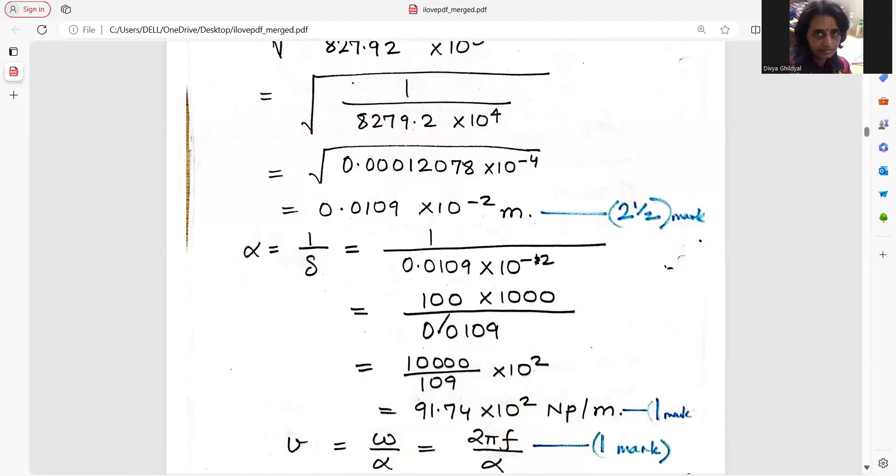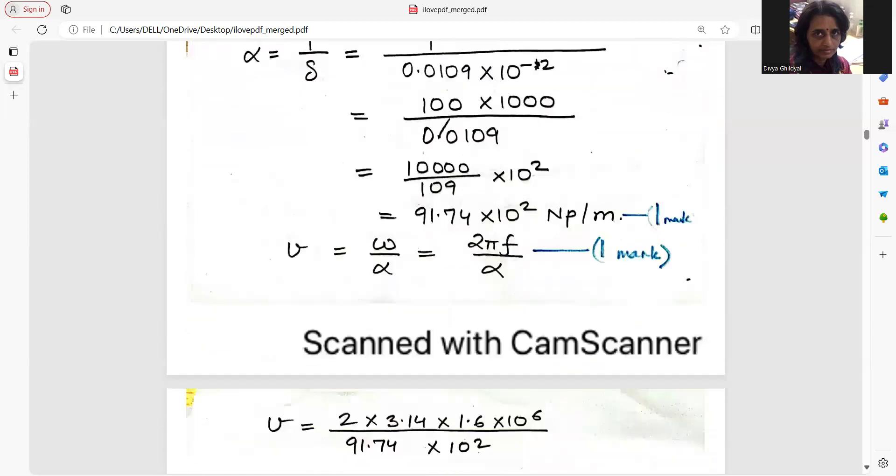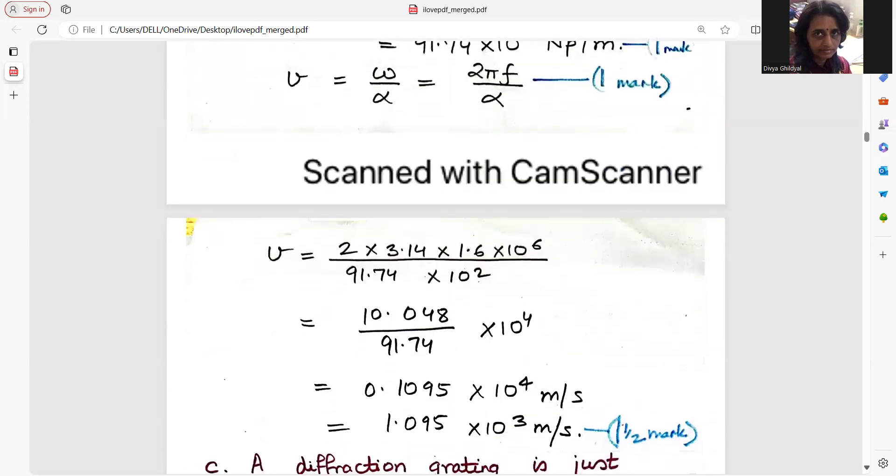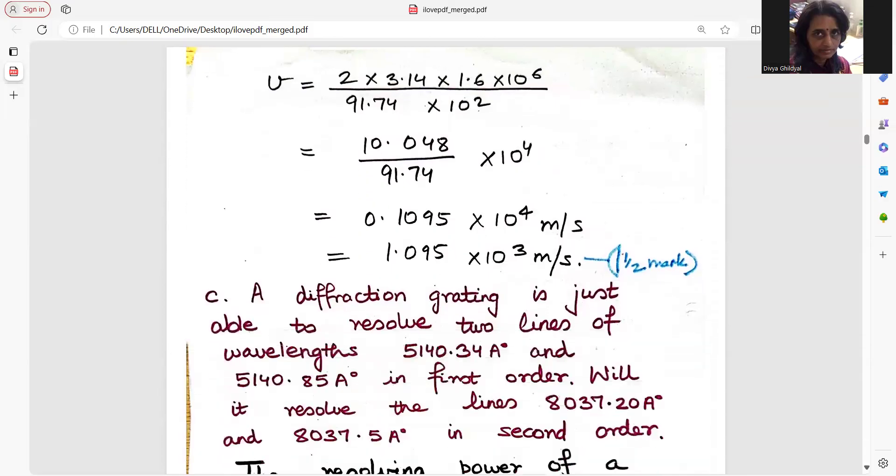They are asking you to find out the velocity. v is omega upon alpha. You can directly put the numerical values and you get the answer.